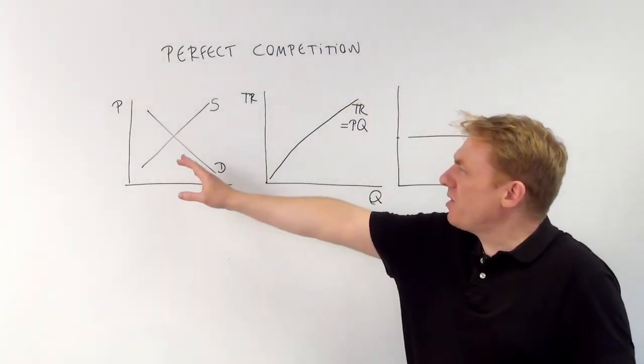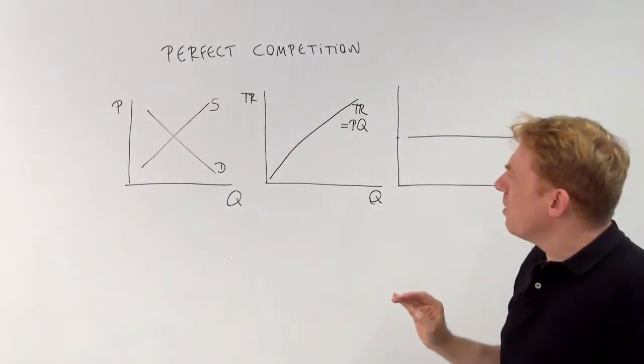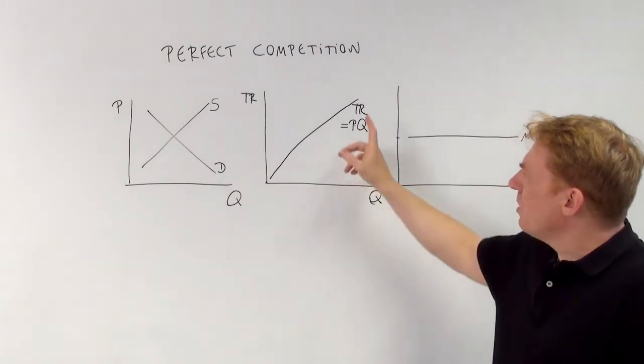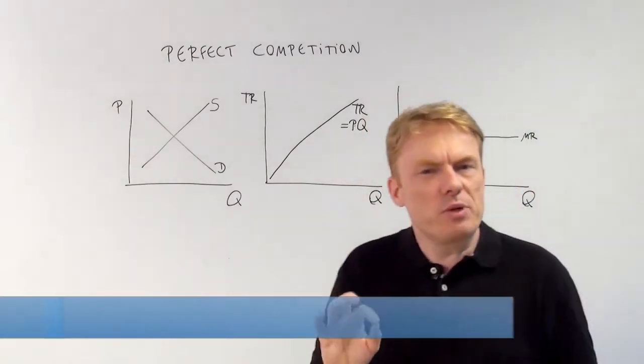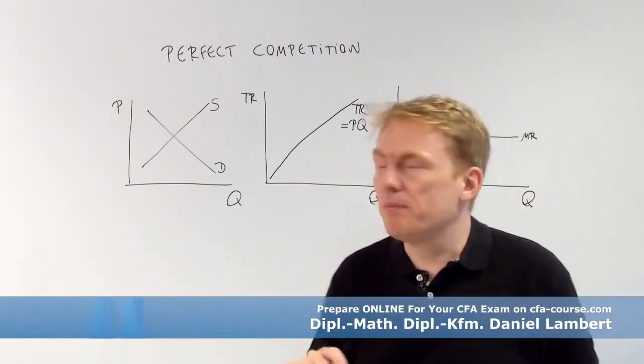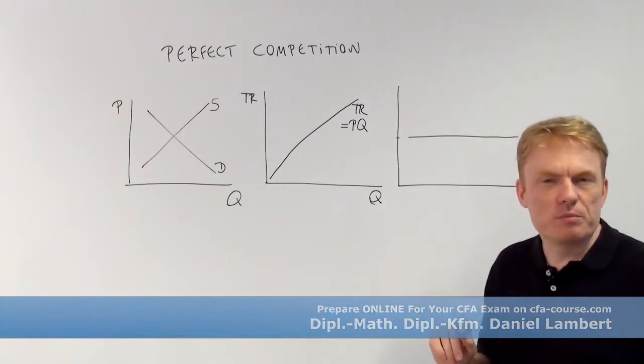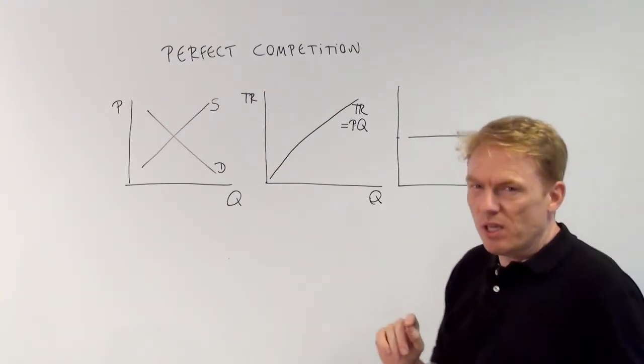Let's take a look at this. We have the demand curve and the supply curve. Here, that's the market. Then, total revenue. As we compute revenue with price multiplied by the quantity, this is the total revenue curve P times Q, price times quantity.